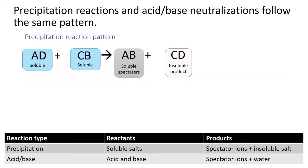Last lesson, we discussed precipitation reactions, and I showed that all precipitation reactions follow a similar pattern. In this pattern, the ions switch partners, and one of the new ion pairs is an insoluble salt. The other ion pair is called the spectator ions.